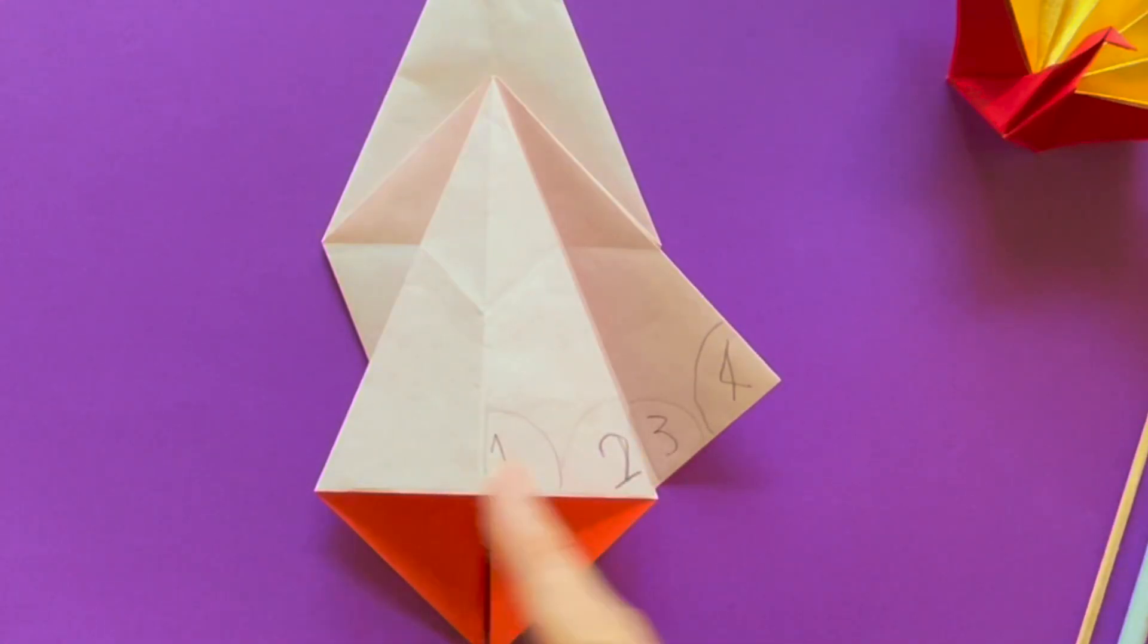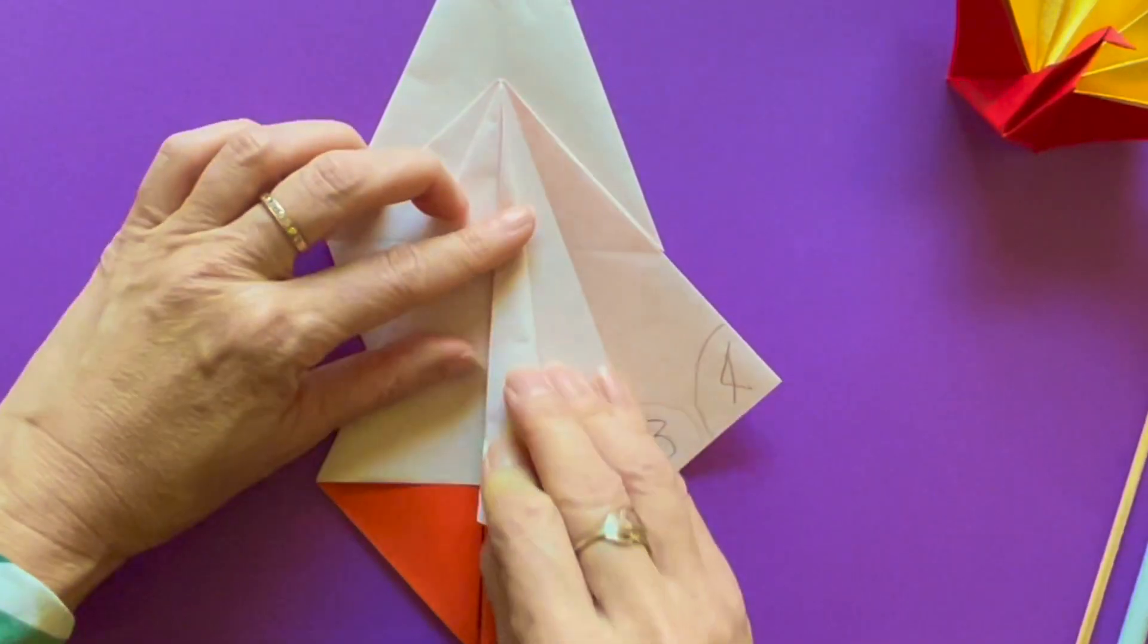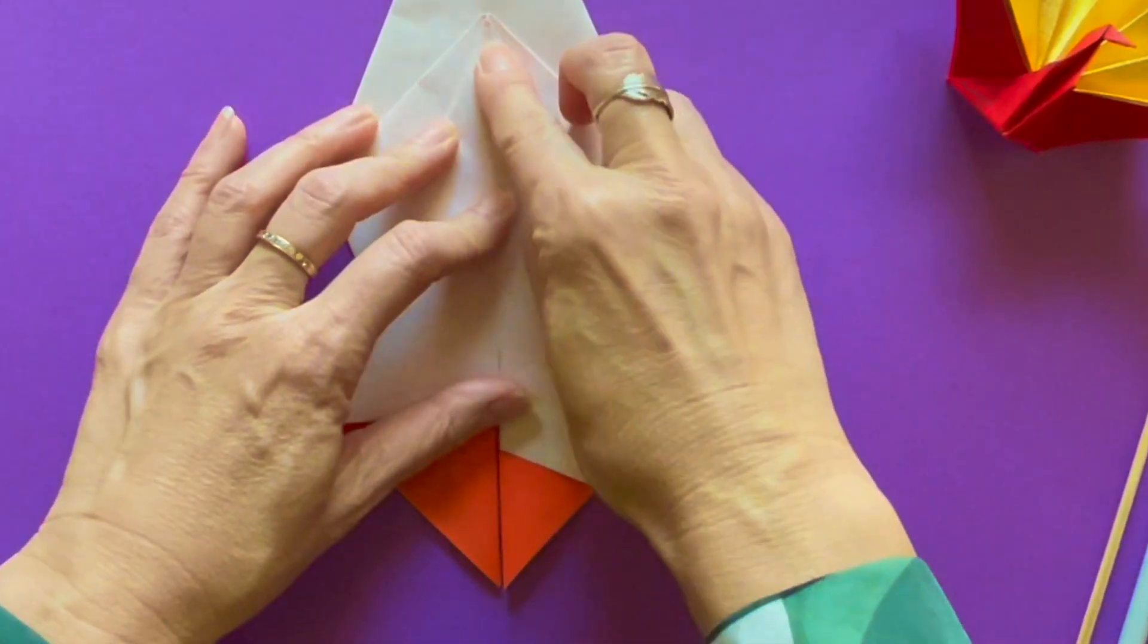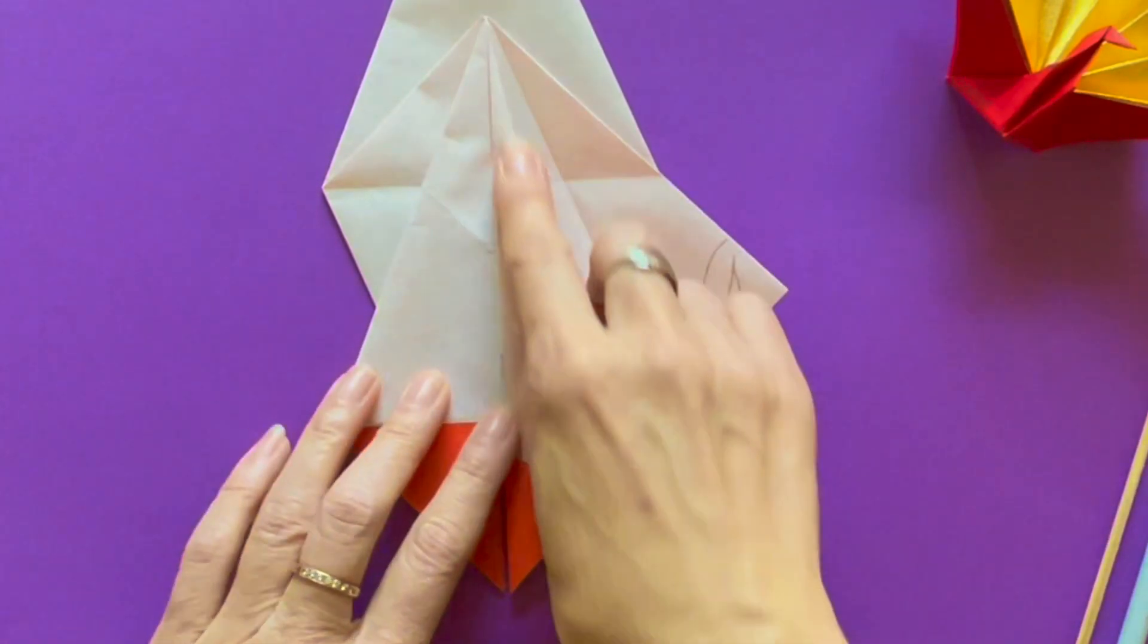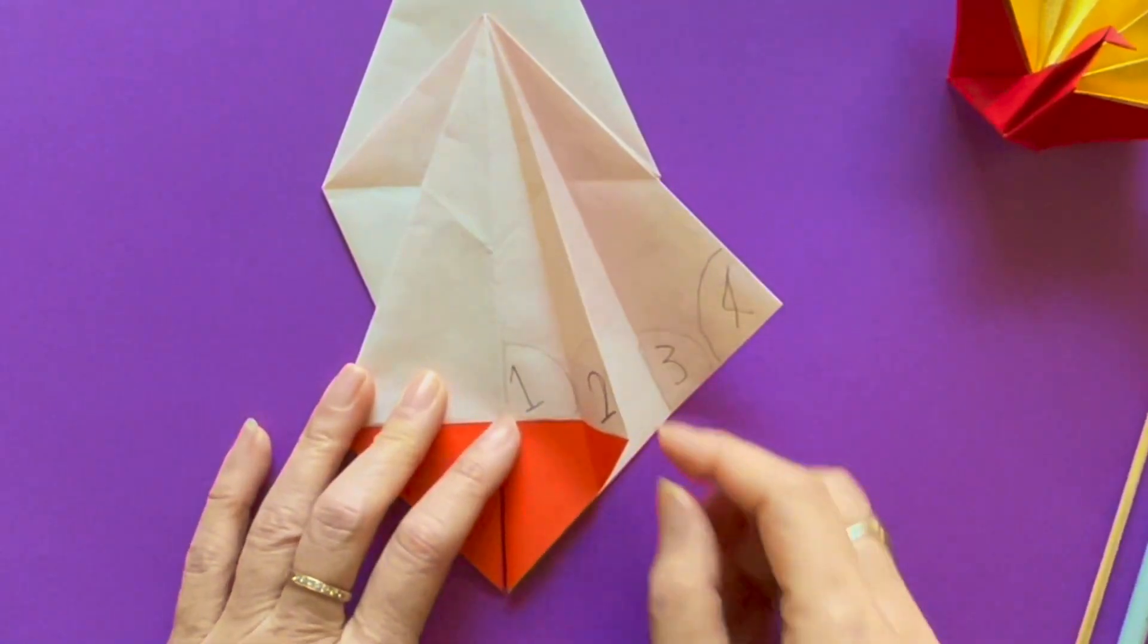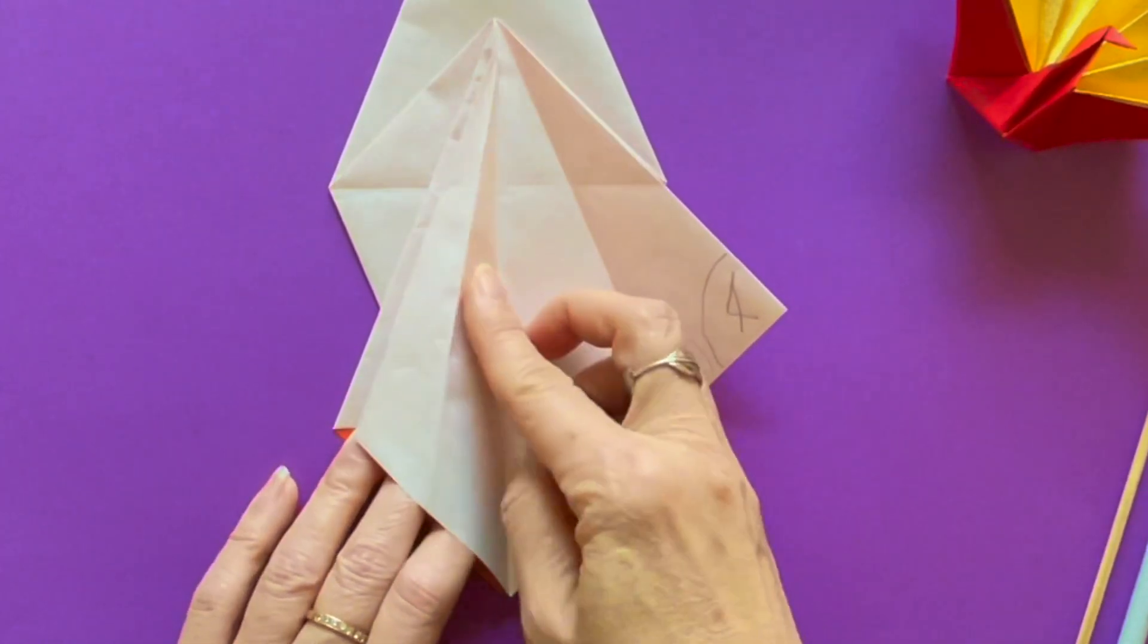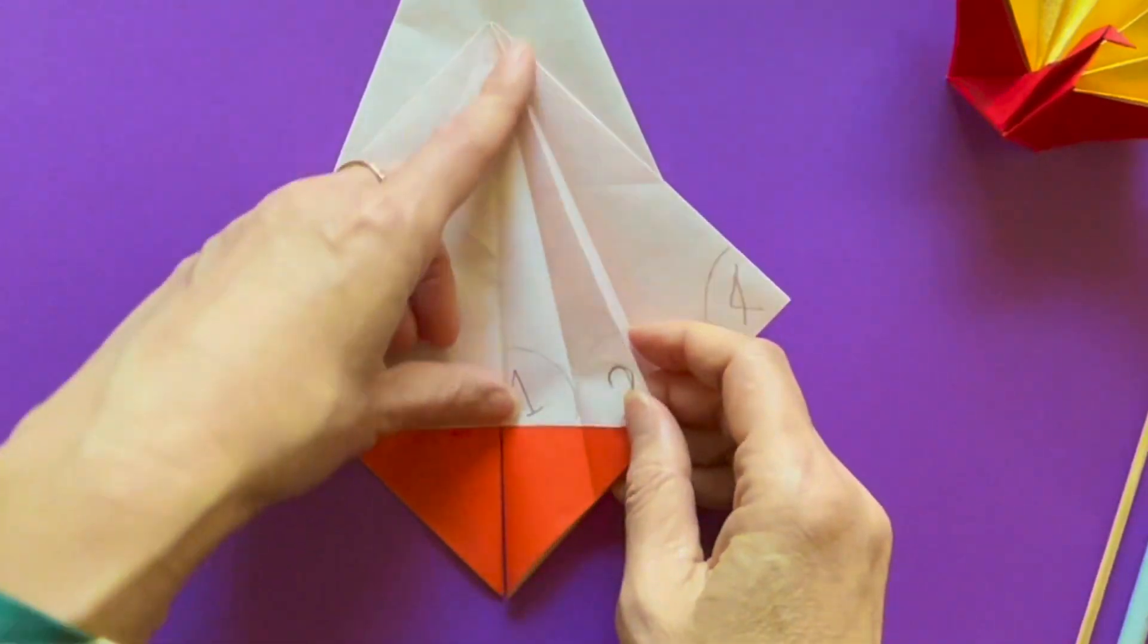Grab the corner of number two and fold that edge to the center vertical crease. Fold it down precisely. After that, unfold the edge you just did. And now you can see one and two. Turn the flap to the left.